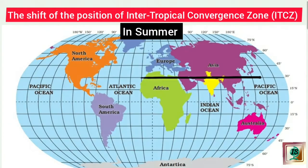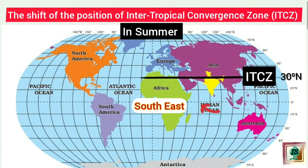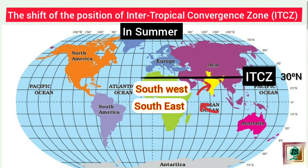At the time of summer solstice, the ITCZ is extended up to 30 degree north latitude over the Indian subcontinent. The southeast winds are also extended over that area for the convergence. They are forced equatorward, and while crossing over the equator, they become southwesterly due to the Coriolis force and rush towards India.